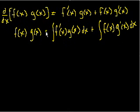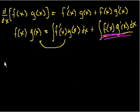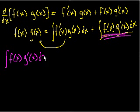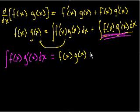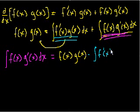That just becomes, and we're doing the indefinite integral, kind of the anti-derivative. So that's the integral of f prime of x, g of x dx, plus the integral of f of x, g prime of x, dx. Now, this might seem a little bit arbitrary. Let me take this one and move it to this side of the equation. So I'm going to subtract this term from both sides of this equation.